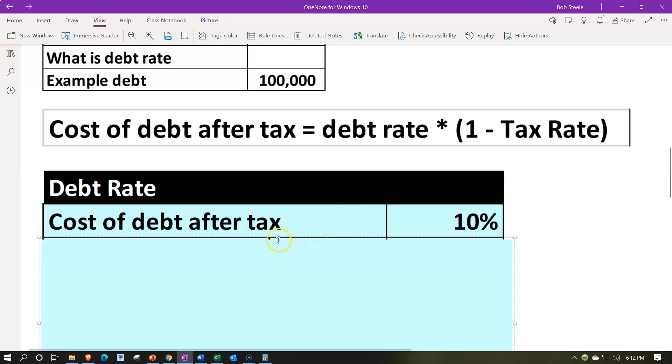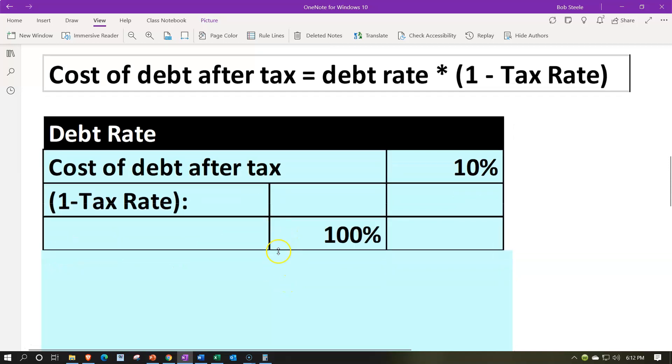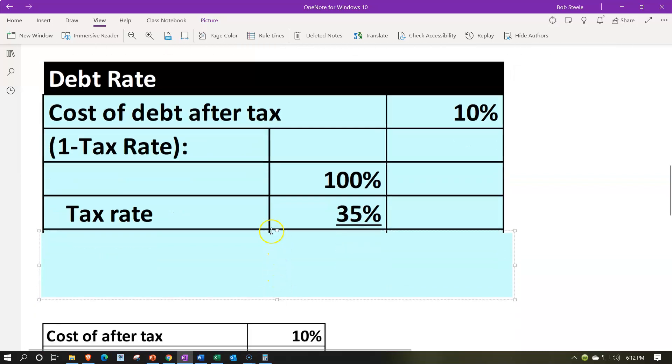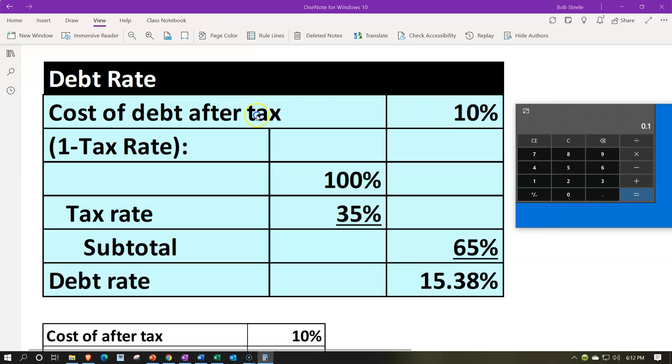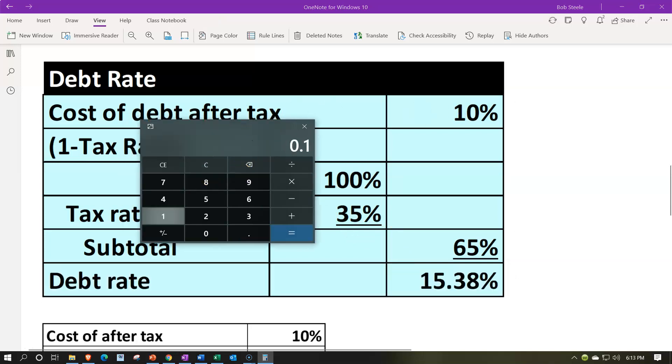We've got the cost of debt after taxes. Then we'll pull in the one minus the tax rate, which is once again, the 100% minus the 35%, the tax rate, one minus the 35%, or one minus 0.35, or 100% minus 35%. That gives us then the 65%. And then we have the 0.1, or 10%, divided by the 0.65. That gives us the 0.15384, or the 15.38% about.